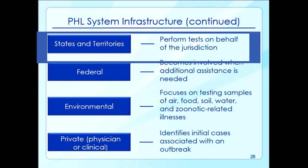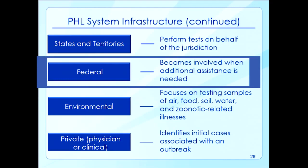Federal public health labs become involved when additional assistance is needed or a widespread public health threat occurs. The CDC, the United States Army Medical Research Institute of Infectious Diseases, and the Food and Drug Administration are examples of federal agencies that operate public health labs. Federal public health labs perform specialized testing that state and local public health labs are unable to perform, such as identifying certain chemical, toxin, radiologic, and biological substances, and they have responsibility for follow-up on a larger scale.